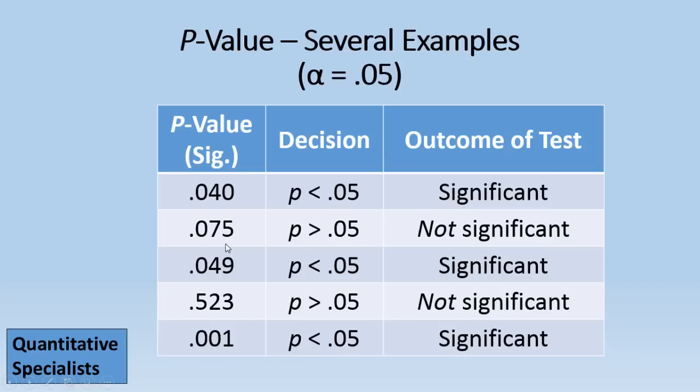Our second value, .075, that's greater than .05, right? So we would say that's not significant. .049, that's very close, but it is less than .05, so that would be significant.